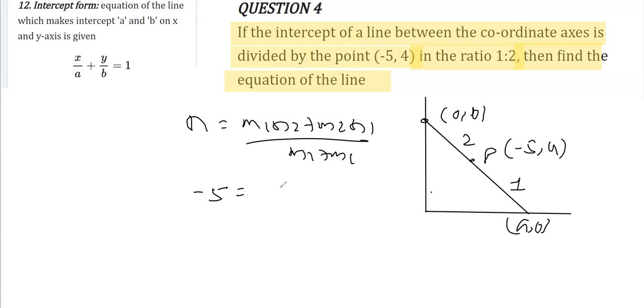So this x, which is -5, equals (m1·x2, that is 0, plus m2·x1, that is 2a) over (m1 + m2), and m1 + m2 is 2 + 1 = 3. So we get -15/3 = 2a, which implies a = -15/2.